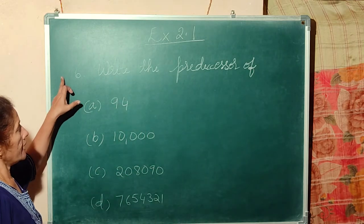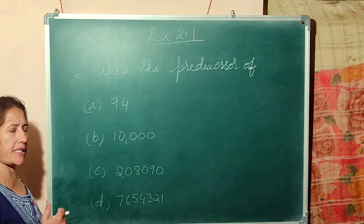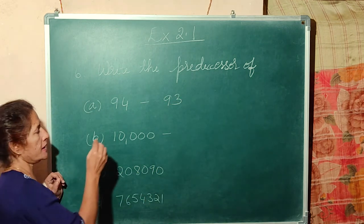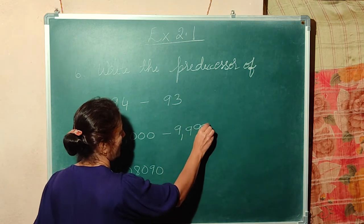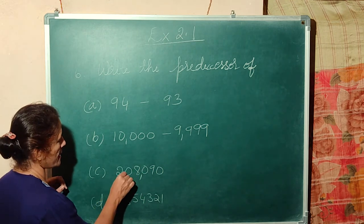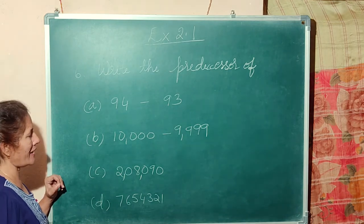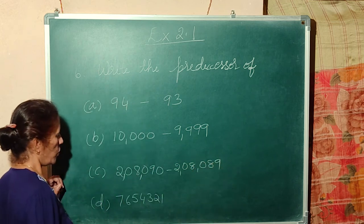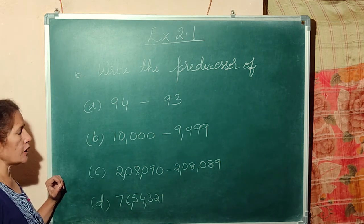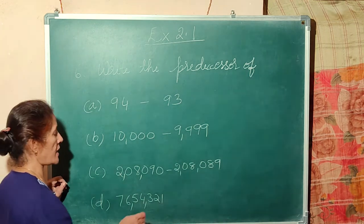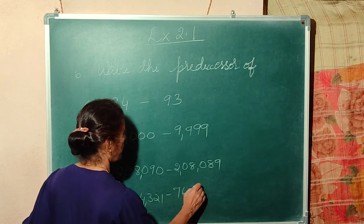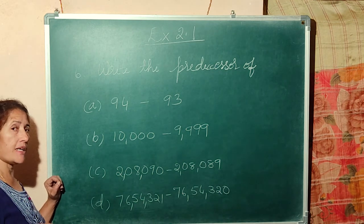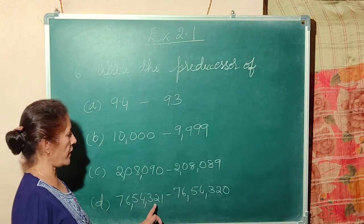Sixth question: Write the predecessor — the previous number. 94, predecessor is 93. 10,000 — what is our previous number? 9,999. What is this? 2,08,019 — what is our predecessor? 2,08,089. What is this number? 76,54,321 — what is our predecessor? 76,54,320. That is our predecessor. Predecessor means previous number. Successor means next number. 3,21 — predecessor is 3,20.